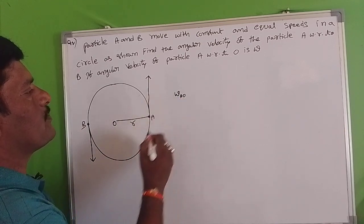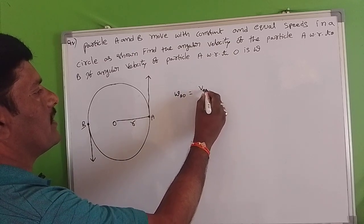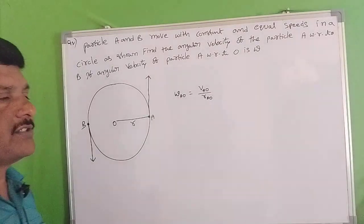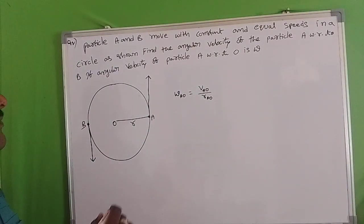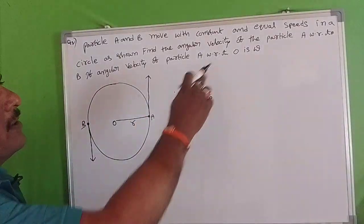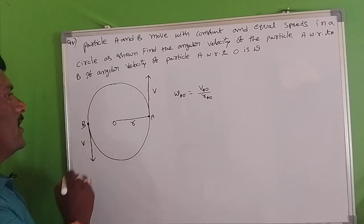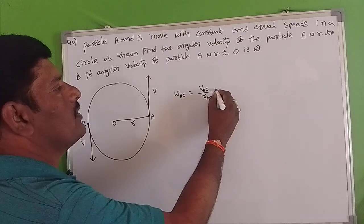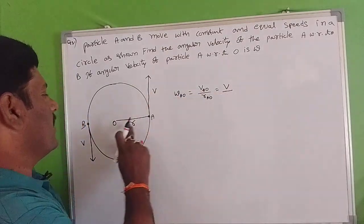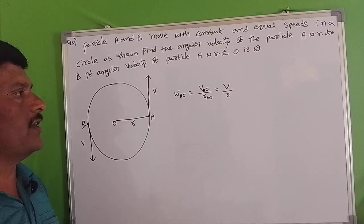The velocity of A with respect to O equals the linear velocity of A with respect to O divided by the distance A to O. According to the statement, both particles have the same velocity V. So V_A is V and the distance R_AO is R. Therefore, omega_AO equals V by R.